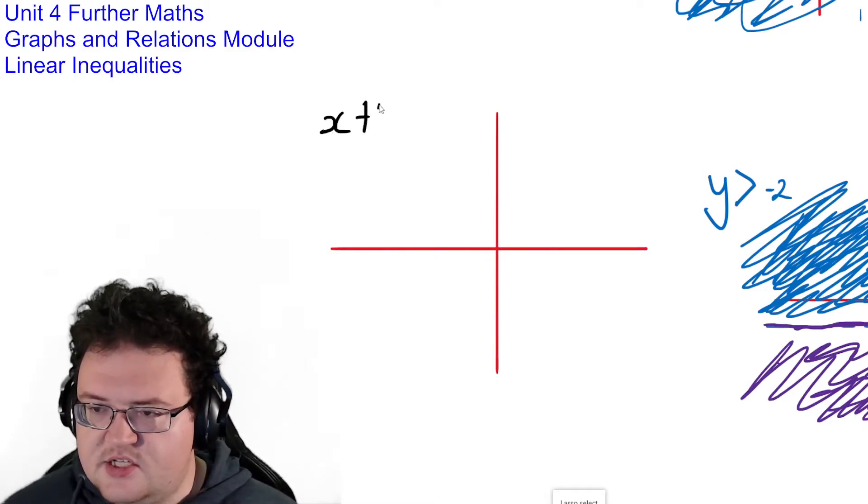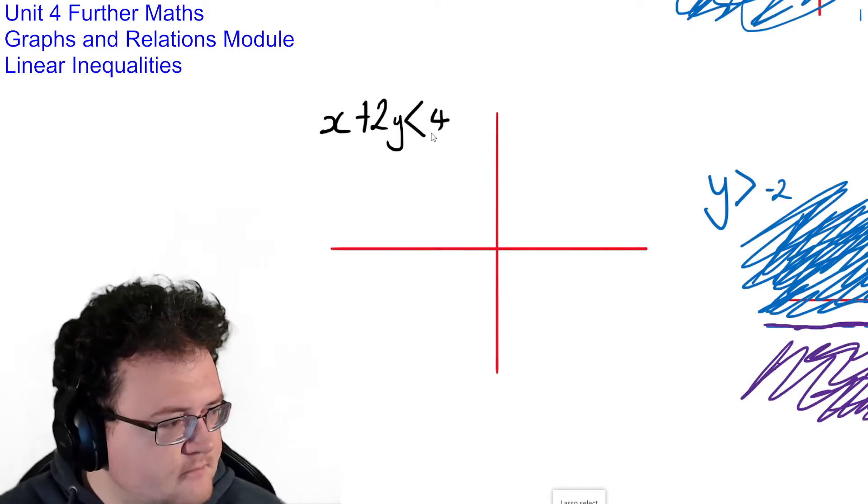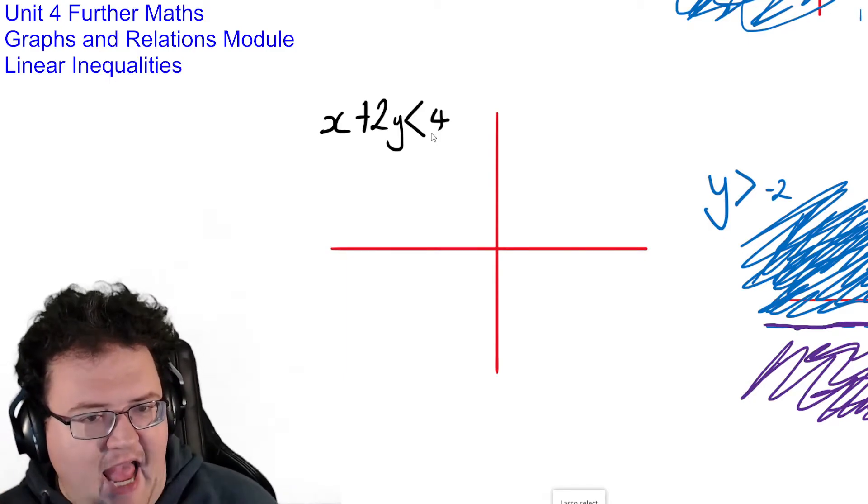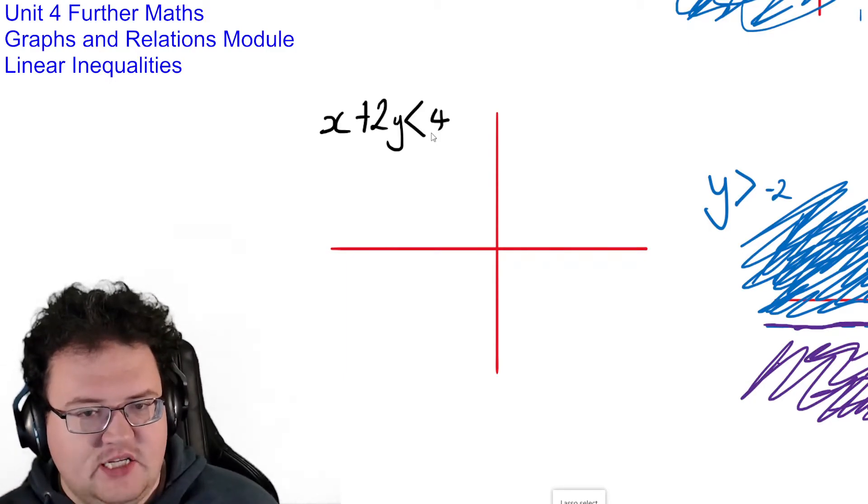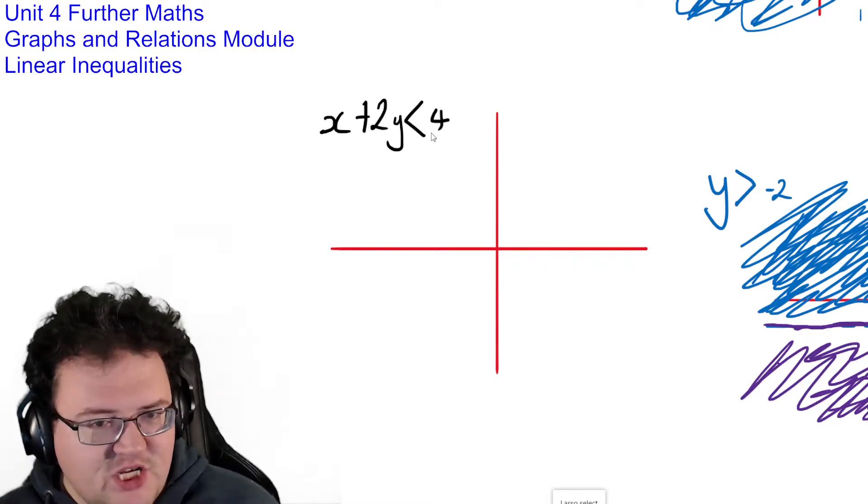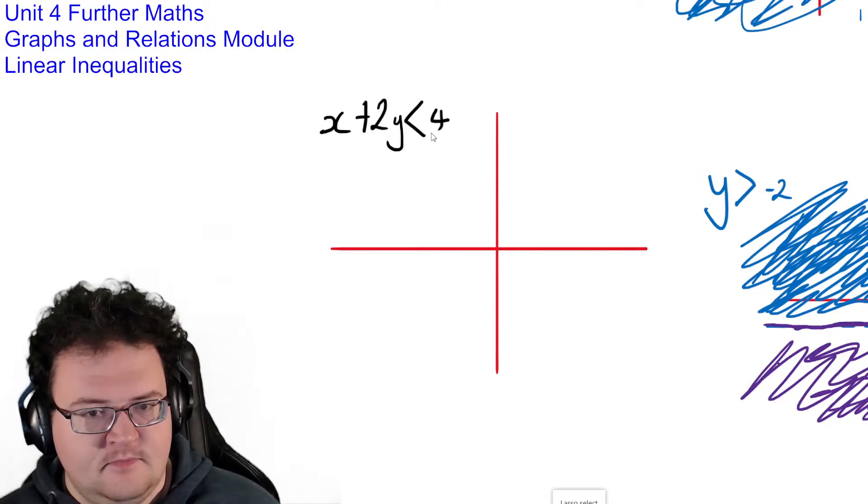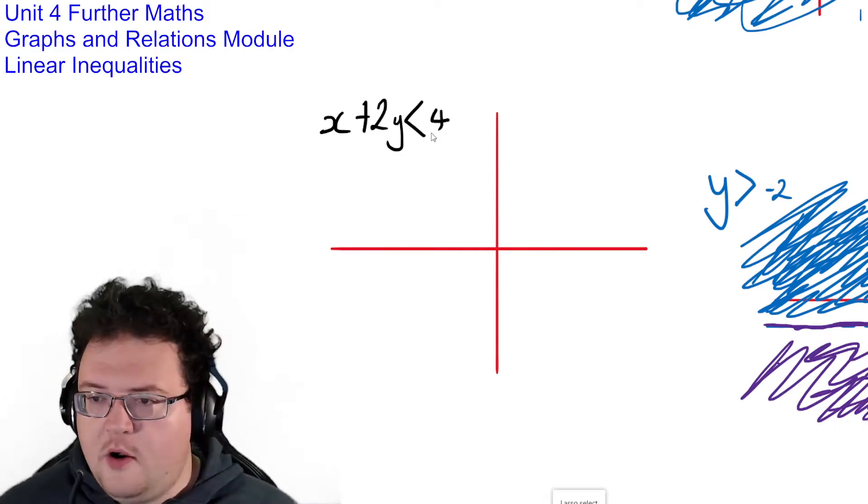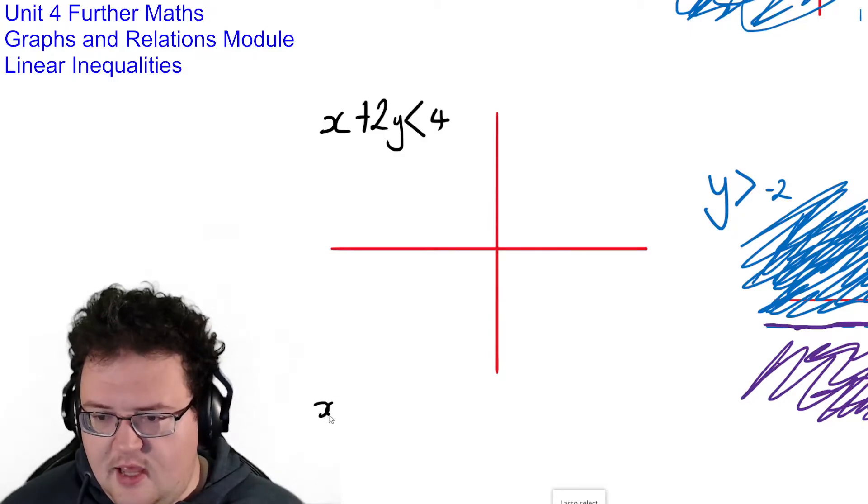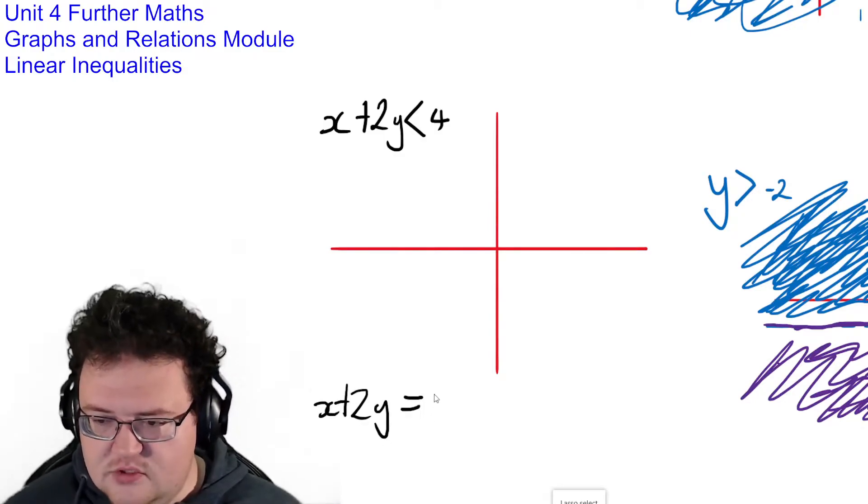x plus 2y is less than 4. Alright, so we've got x and y on the same side opposing an inequality. Now we can draw the graphs of these. It's actually quite easy to do because you guys have already done it. What I want us to do is I want us to think about x plus 2y equals 4.